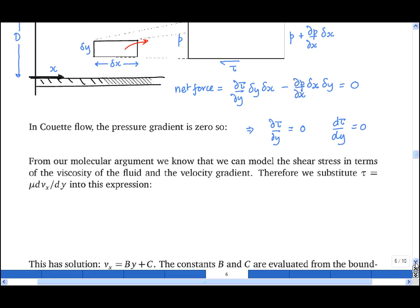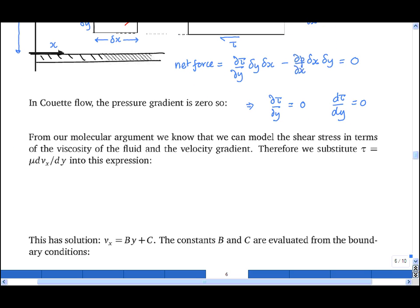Now we know that we can model the shear stress in terms of the velocity gradient. d tau by dy is equal to d by dy of our expression for tau, which is mu, the viscosity, times dv_x by dy, where v is the velocity in the x direction.